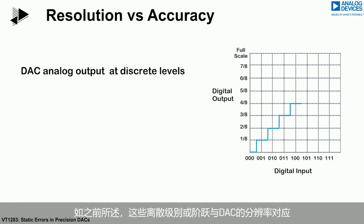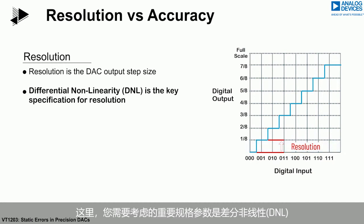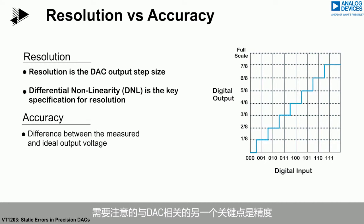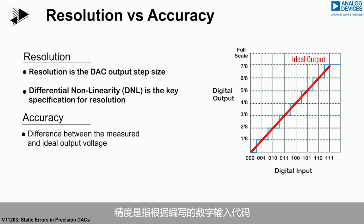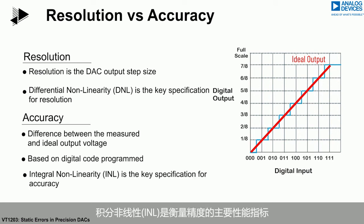These discrete levels, or steps, correspond to the resolution of the DAC. The key specification to consider here is differential non-linearity, or DNL. Another key point in relation to a DAC is accuracy. The accuracy represents the difference between the measured output voltage and the expected output voltage, based on the programmed digital input code. The key specification for accuracy is integral non-linearity, or INL.